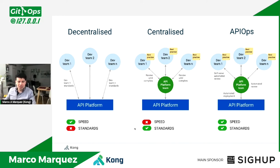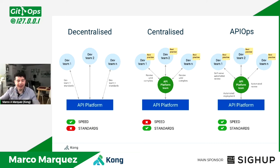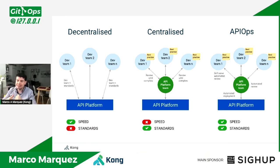Then we have a centralized model — a way to avoid errors. Dev team one, two, and N all go into a centralized point and must use best practices, because everything is reviewed until it complies. Everybody sending an API needs to be authenticated, provide metrics, and meet company requirements. Standards are guaranteed, but the problem is that we now have a team in the critical path, so we're not as fast.